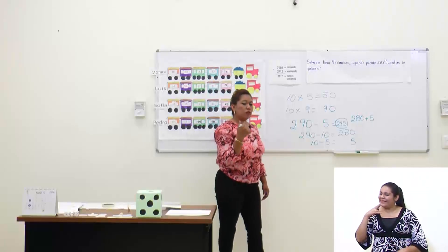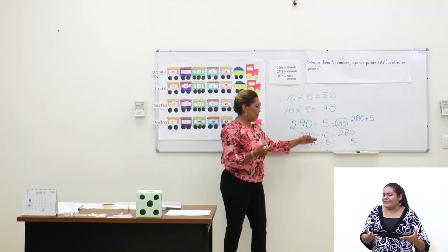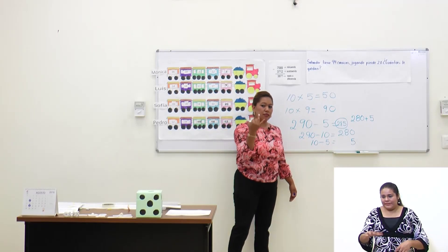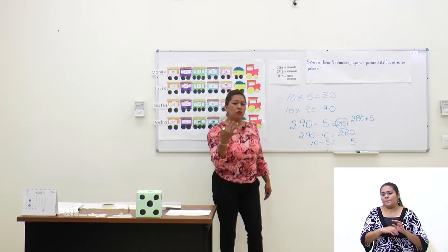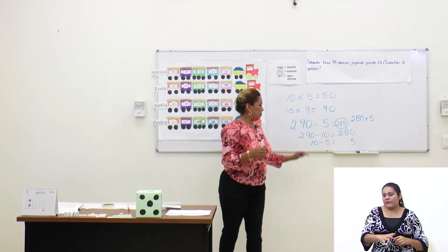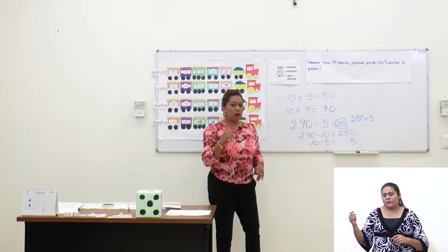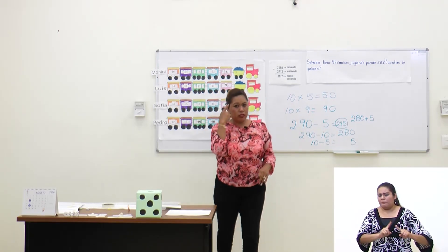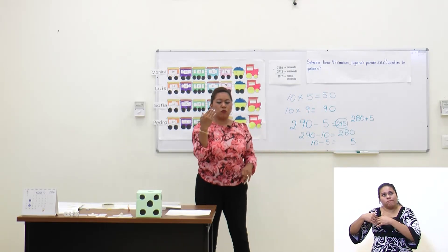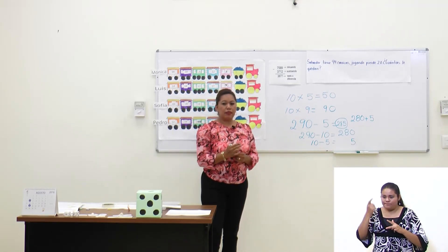¿Qué hicimos? Fuimos complementando a 10: del 5, contamos 6, 7, 8, 9, 10. Y de esta manera obtenemos fácilmente un cálculo en nuestra cabecita para que así nosotros podamos calcular mentalmente.